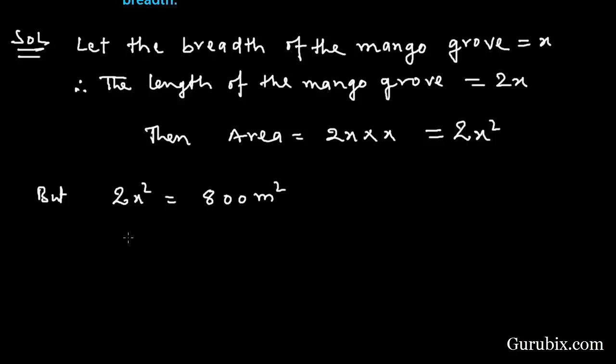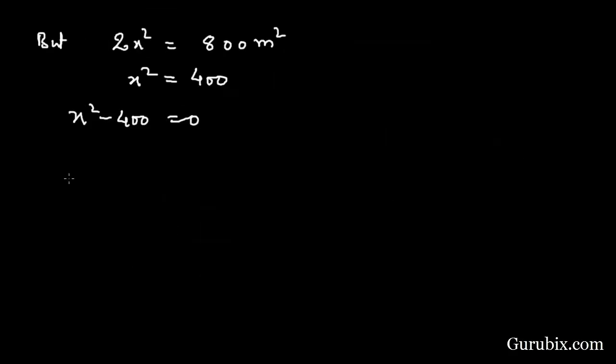But 2x squared is given as 800 square meters. Therefore, x squared equals 400. This means x squared minus 400 equals 0.